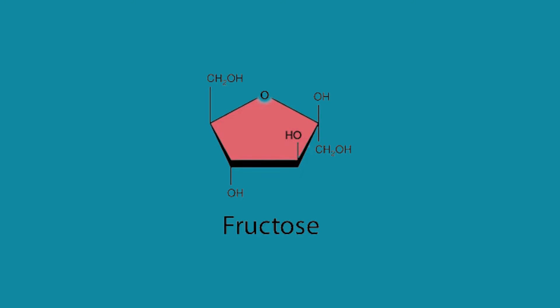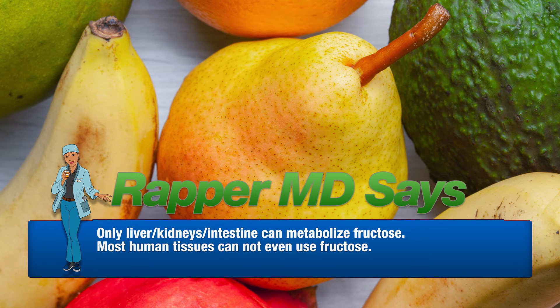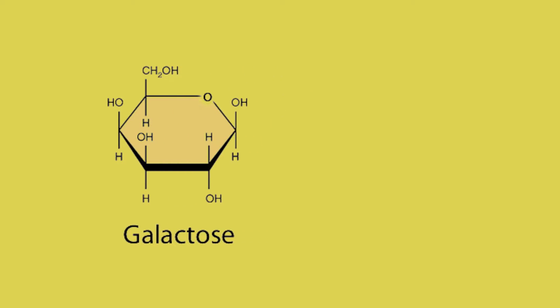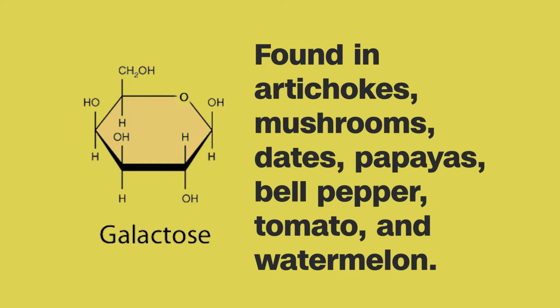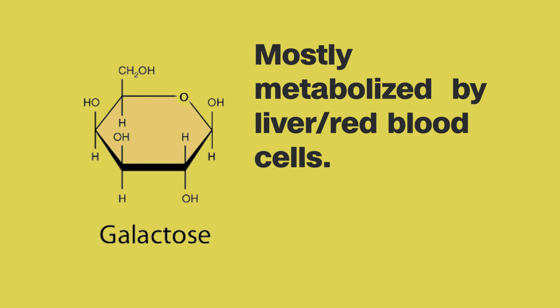Other monosaccharides include fructose — the sugar found in fruits and some vegetables. Only the liver, kidneys, and intestine can metabolize fructose; most human tissues cannot use it at all. Galactose is found in artichokes, mushrooms, dates, papayas, bell pepper, tomato, and watermelon, and is mostly metabolized by the liver and red blood cells.